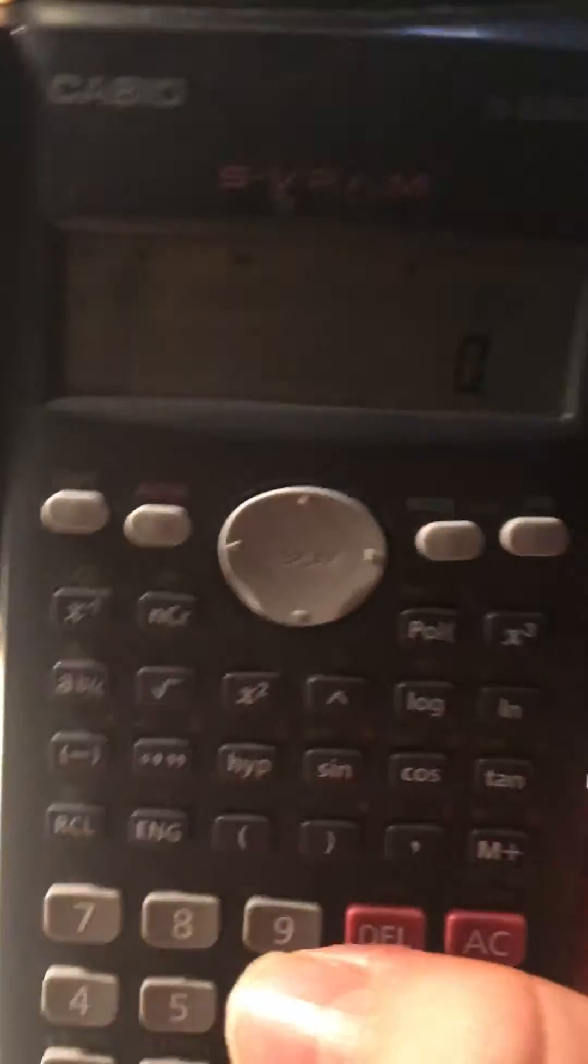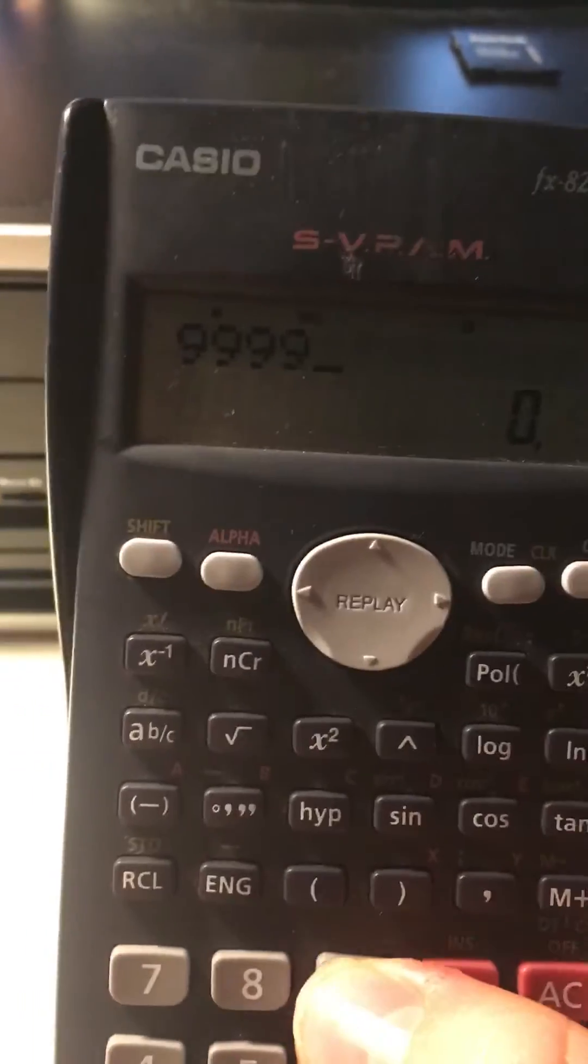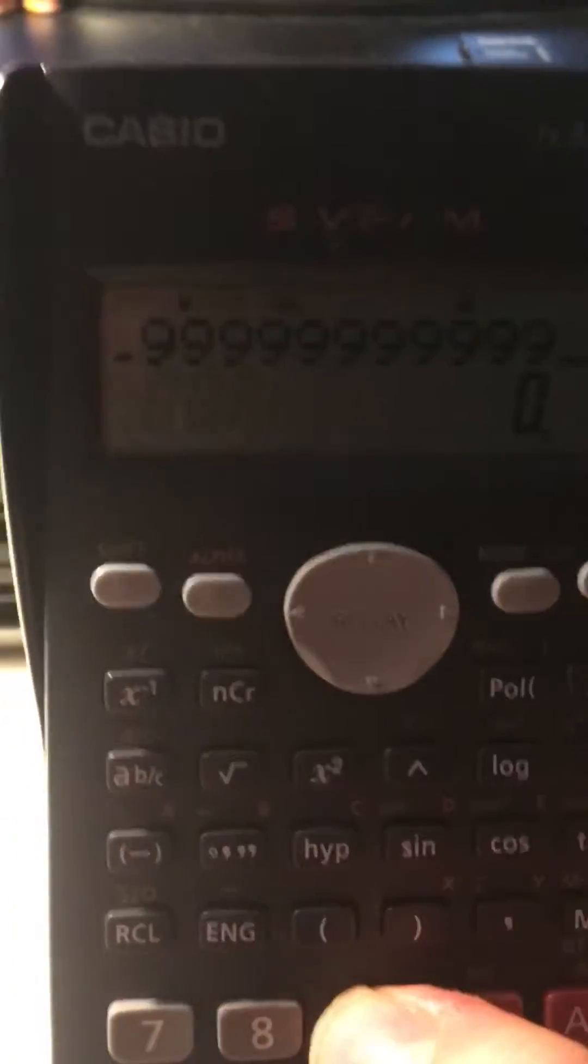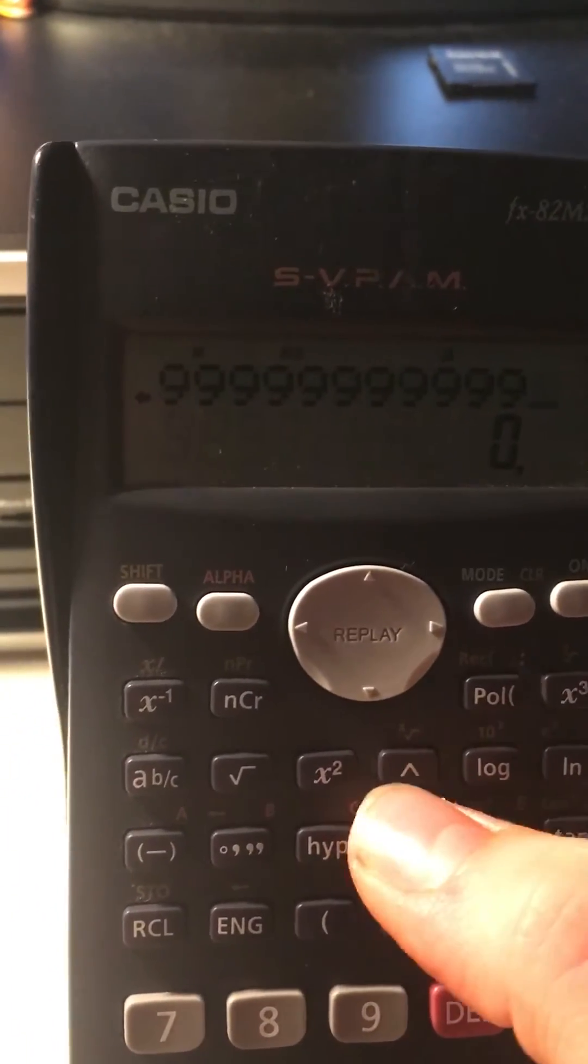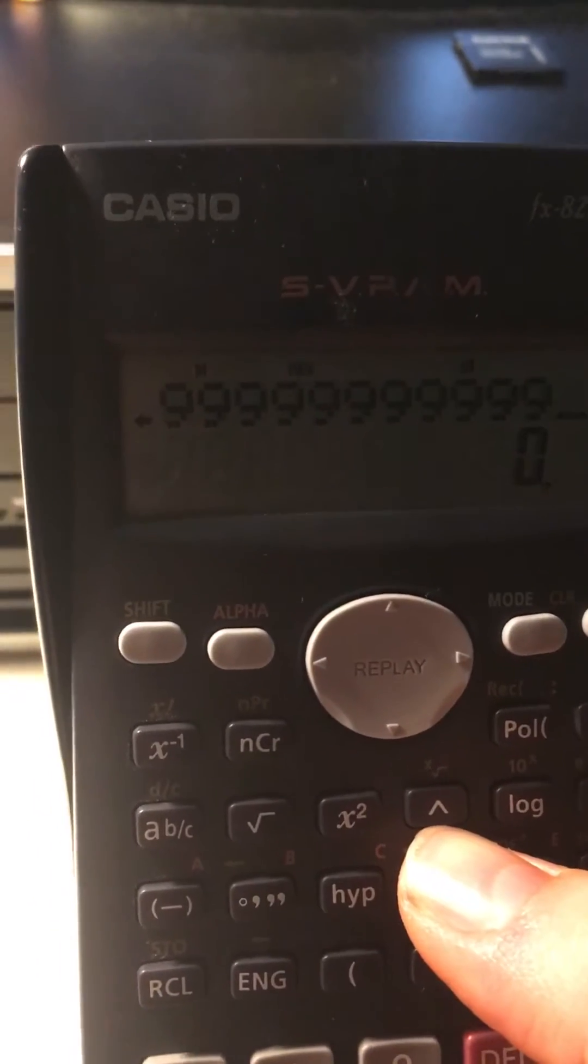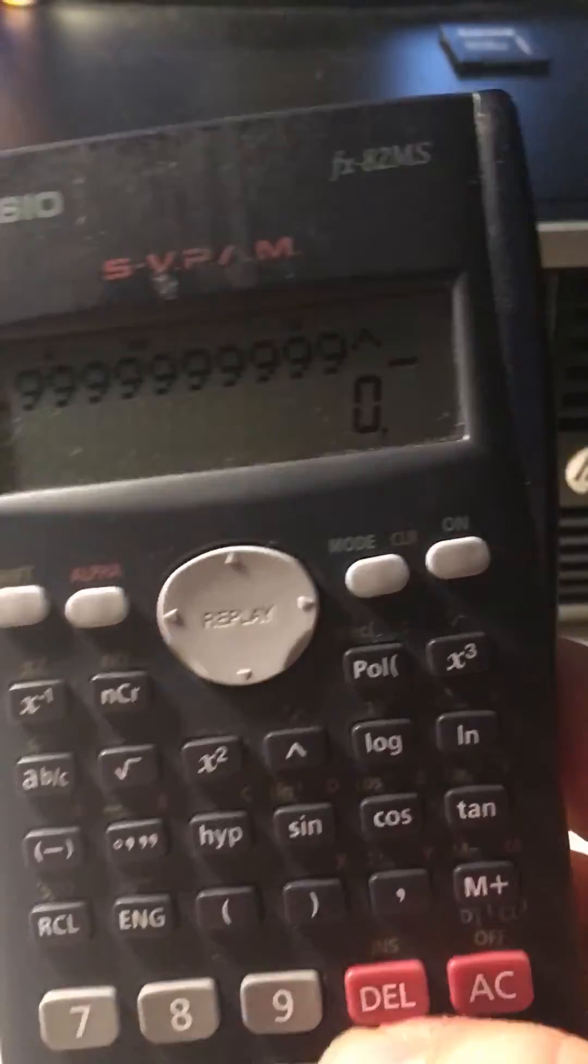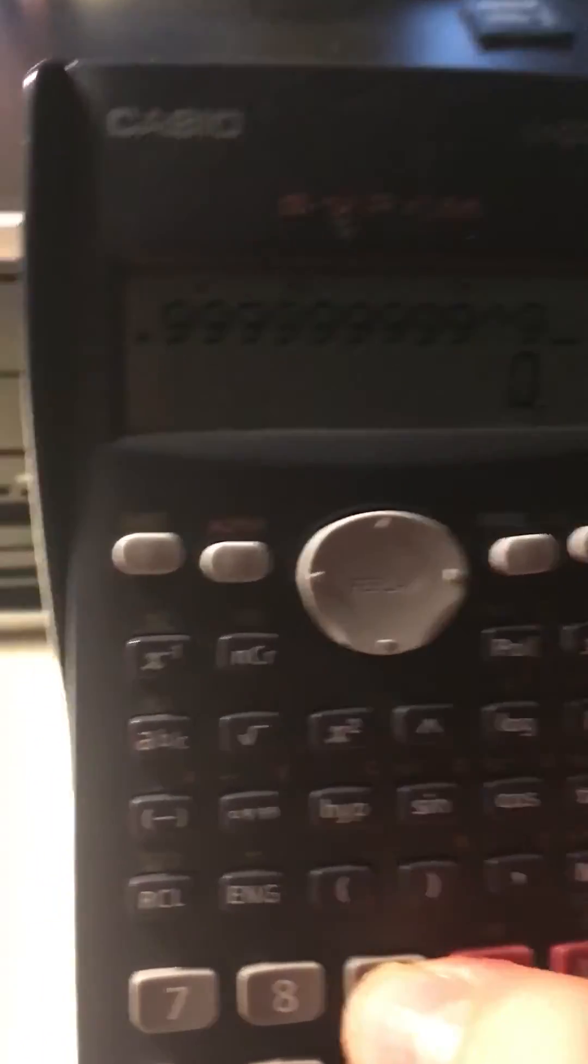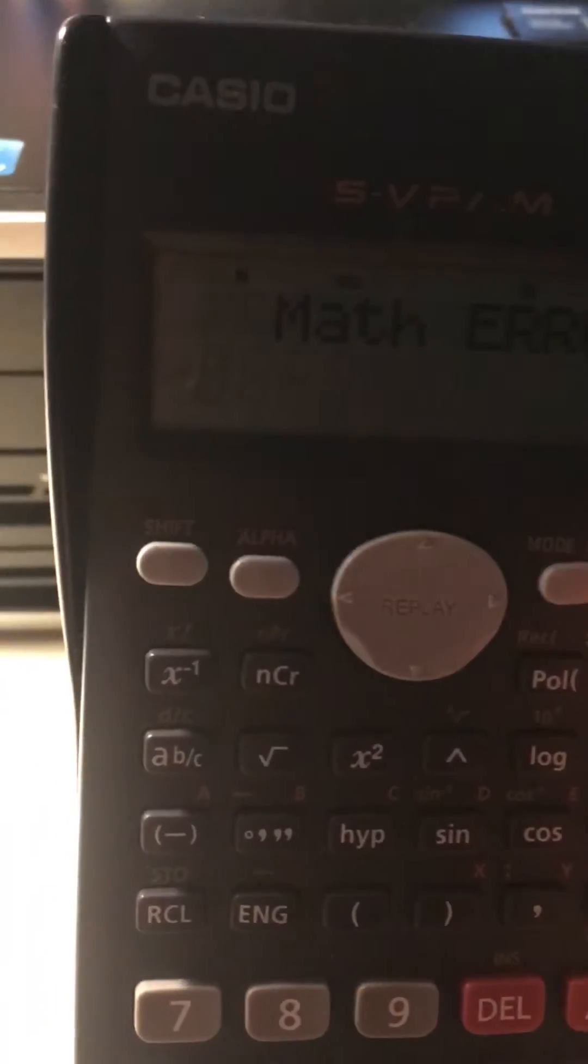The second one you can achieve by putting a pretty big number into your calculator. So let's say we spam this line button, and then you do this button here. It's like a triangle without the lower stripe. You press that, then you just press 9 a few times and do equals. And it says math error because it's a pretty big number and the calculator just can't handle it.